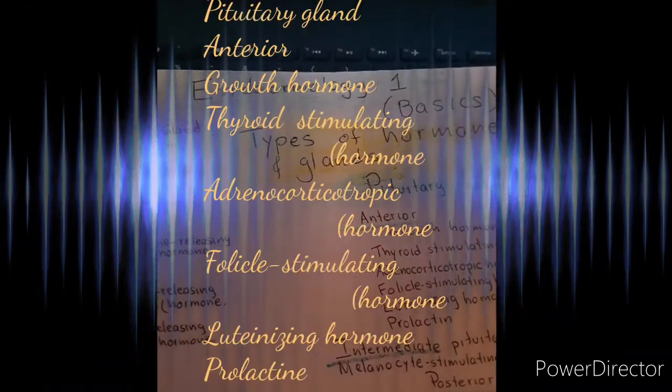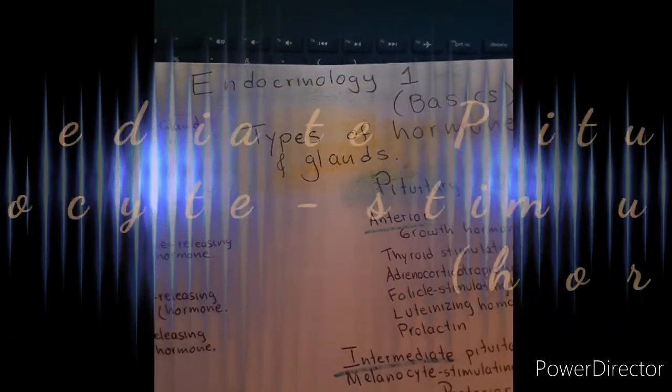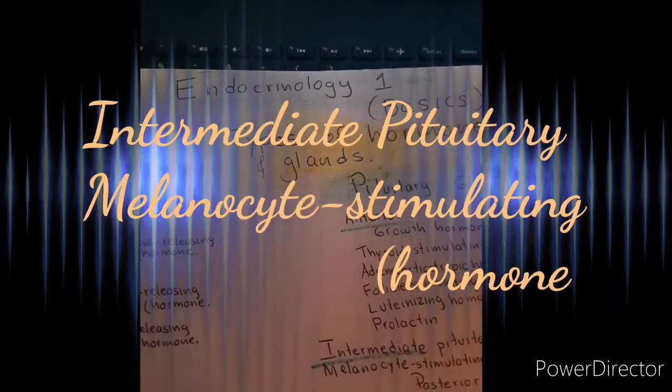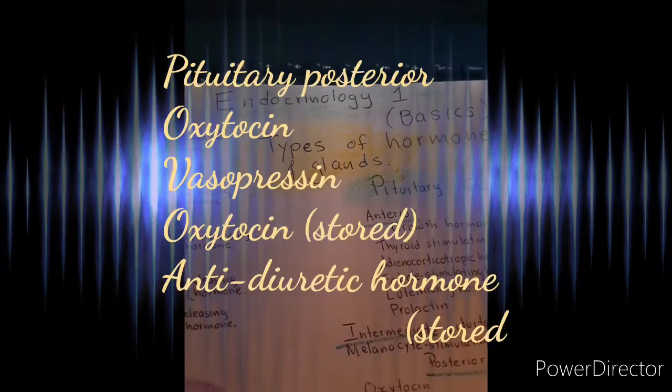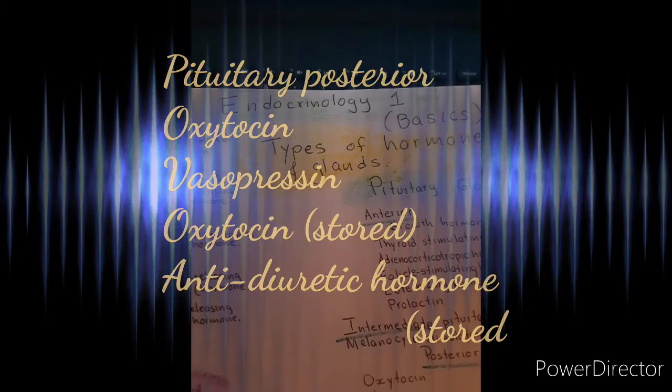They produce the hormones. Under the pituitary gland anterior: growth hormone, thyroid stimulating hormone, adrenocorticotropic hormone, follicle stimulating hormone, luteinizing hormone, and prolactin.